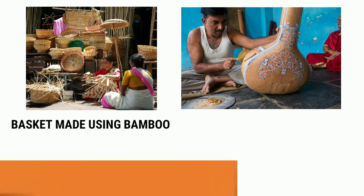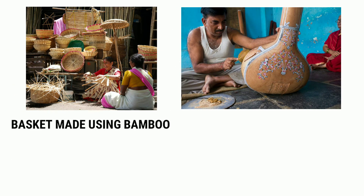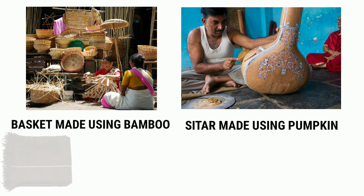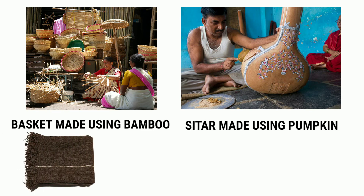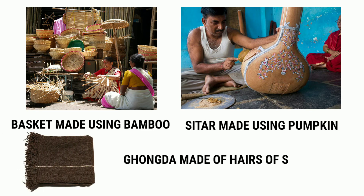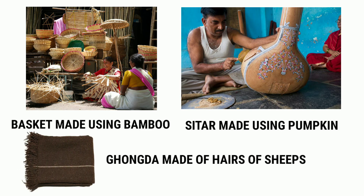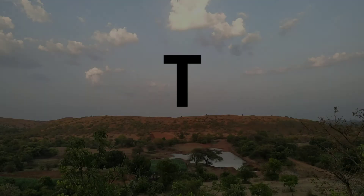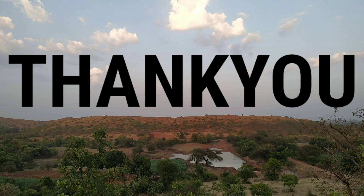Local art: Like other regions, people in Sangli use bamboo to make baskets, pumpkin to make sitar, and the wool of sheep to make ghongda cloth. Thank you for your patient hearing.